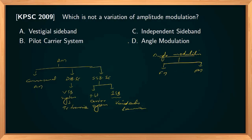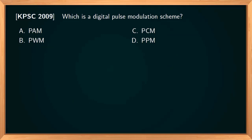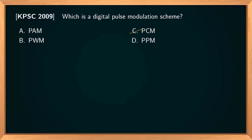The correct option is angle modulation. In this question, which is the digital pulse modulation scheme? PAM, PWM, and PPM are all analog modulation schemes. The only digital modulation scheme among these is PCM — pulse code modulation. PAM, PWM, and PPM modulate analog information, while PCM produces a binary coded output in digital form. In PWM, the duration of the pulse is varied; in PAM, the amplitude is varied; in PPM, the position of the pulse is varied. PCM involves sampling, quantization, and encoding, giving a binary output.